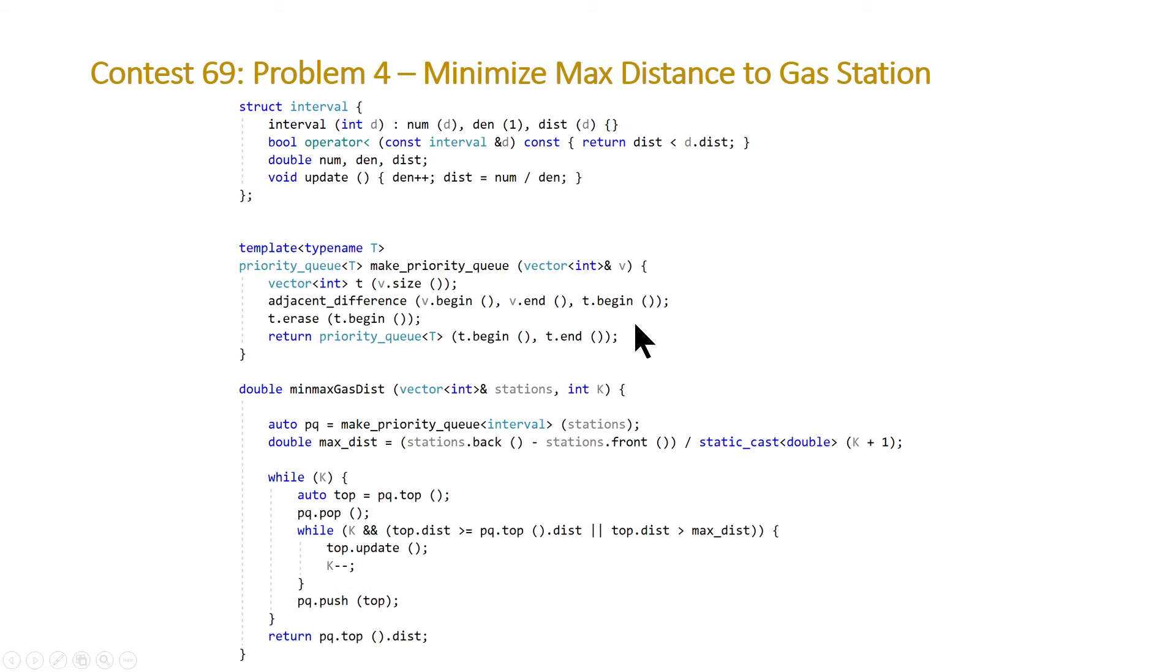We have to call this line t.erase of the first element in our array t, because adjacent_difference doesn't just give you the differences between the elements; it also gives you the difference between zero and the first element, and we don't need that for our algorithm. And once we have this vector, we can then construct and return a priority queue of type t, which we're passing in as interval here, and we're using the constructor that takes two iterators in order to construct this priority queue.